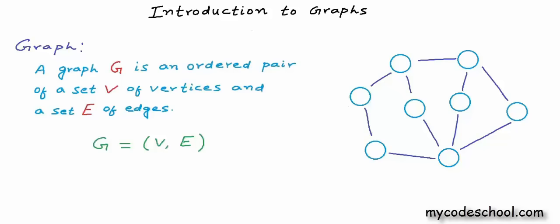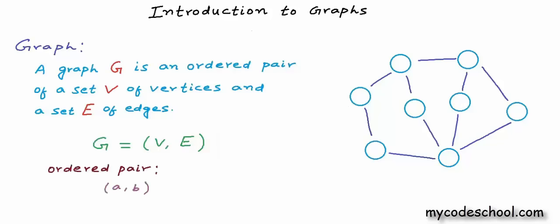A graph G is an ordered pair of a set V of vertices and a set E of edges. An ordered pair is just a pair of mathematical objects in which the order of objects in the pair matters. We write and represent an ordered pair as objects separated by a comma put within parenthesis. Because the order here matters, V is the first object in the pair and E is the second object. An ordered pair AB is not equal to BA unless A and B are equal. In our definition of graph, the first object in the pair must always be a set of vertices and the second object must be a set of edges — that's why we call it an ordered pair.